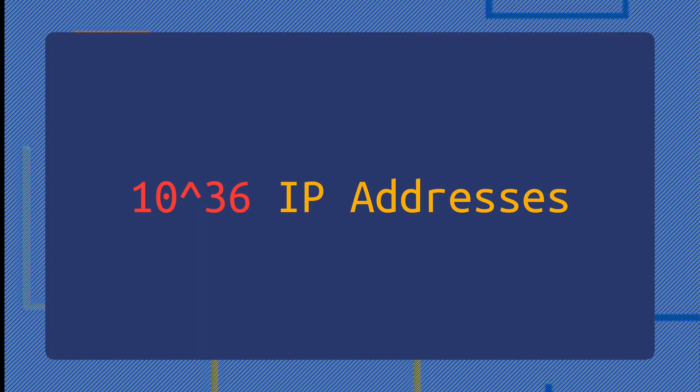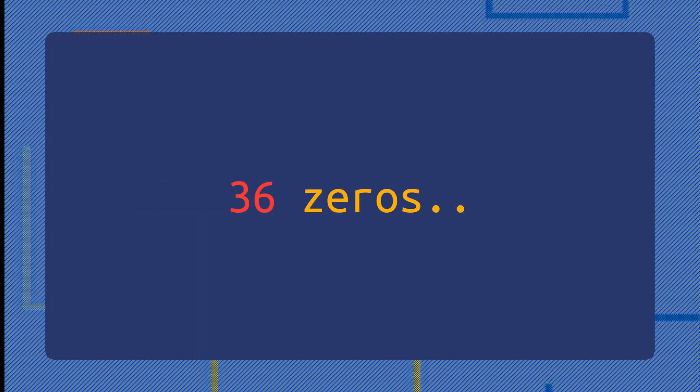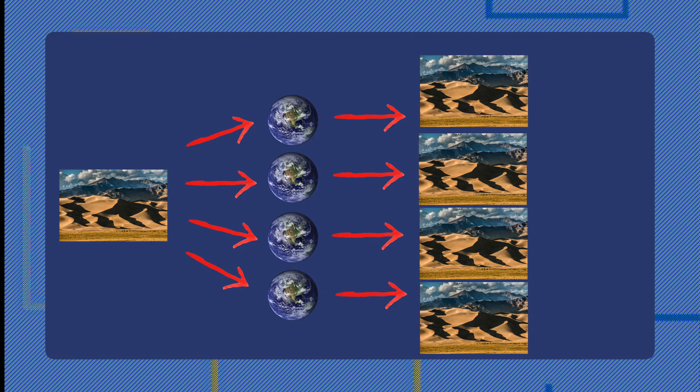Even if every single thing with a microchip had an IP address, we have like 340 undecillion addresses in IPv6. For context, even if every grain of sand on Earth represented a whole new Earth worth of grains of sand, and each one of those new grains of sand got an IP address, we still wouldn't come close to the number of IPv6 addresses available. So there's a fun fact.